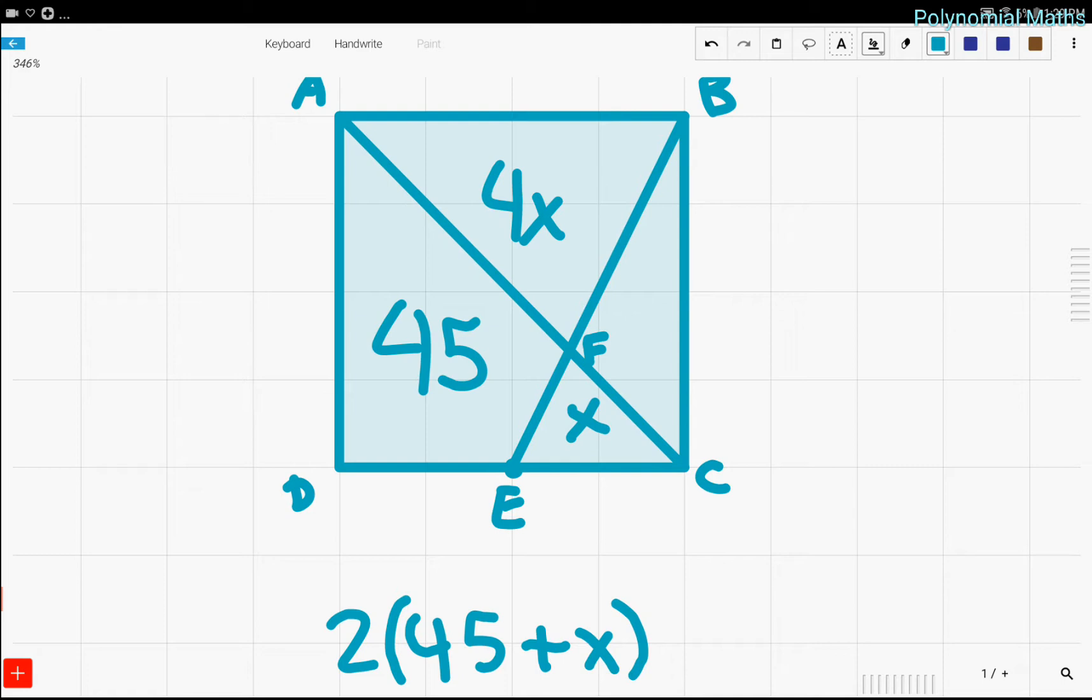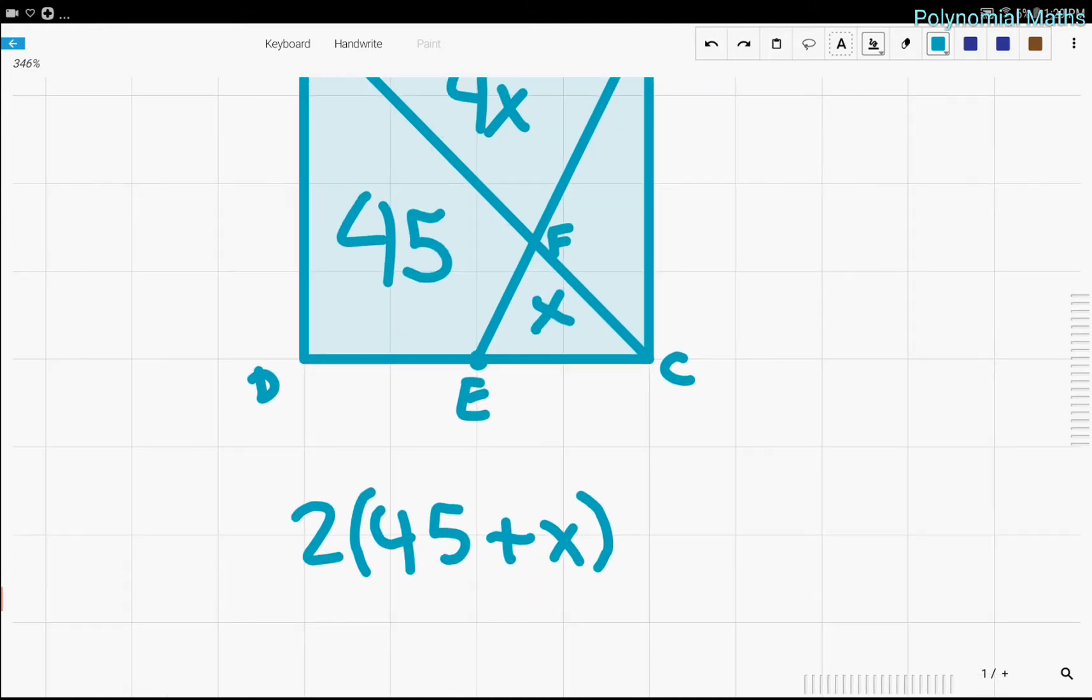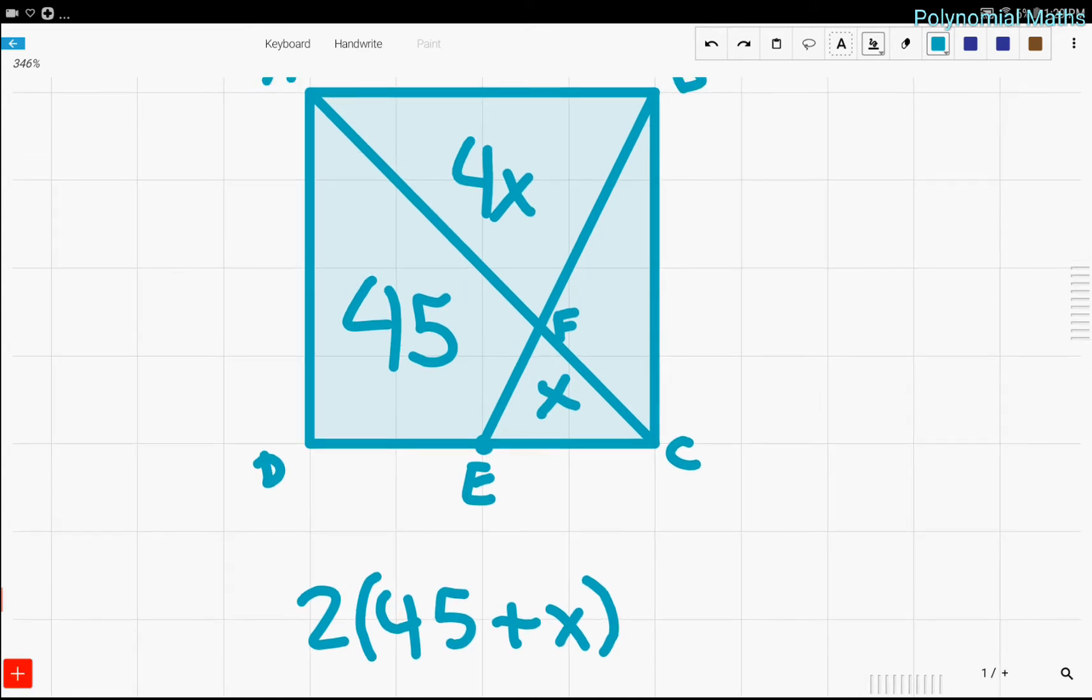We also know that 45 plus 4X is 3 fourths of the square. Because this whole area is 1 fourth of the area of the square. So therefore this is 3 fourths the area of the square. So that means 4 thirds times this area is equal to the whole square.